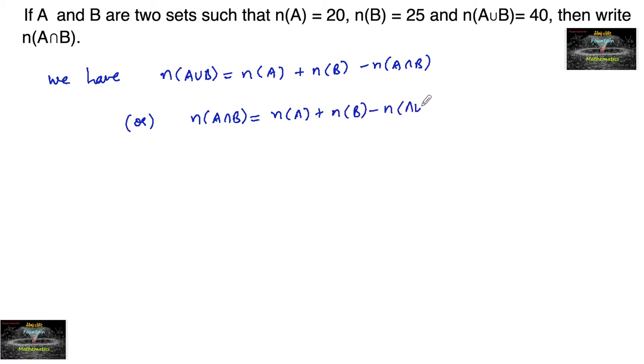When the two sets are joined, so in the given problem, n(A) = 20 and n(B) = 25 and n(A∪B) = 40. So n(A∩B) = 20 + 25 = 45, 45 - 40 = 5.